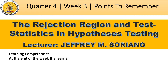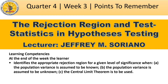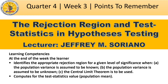At the end of the week, we would like to master the following learning competencies. First, we would like to identify the appropriate rejection region for a given level of significance when: A) the population variance is assumed to be known, B) the population variance is assumed to be unknown, and C) the central limit theorem is to be used. We would also like to master how to compute for the test statistics value for the population mean.